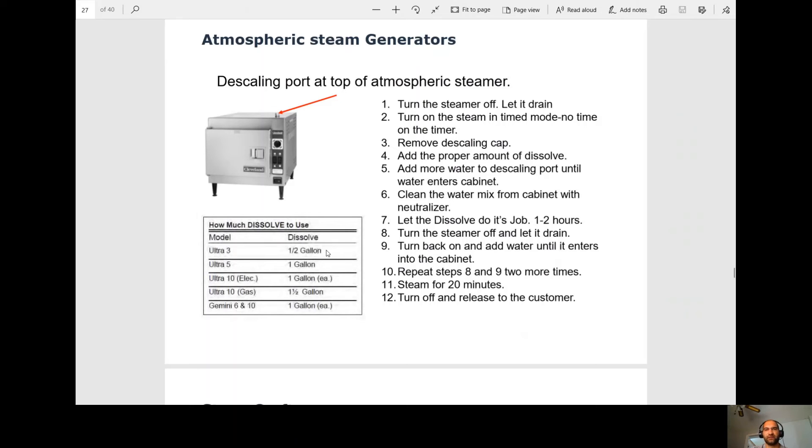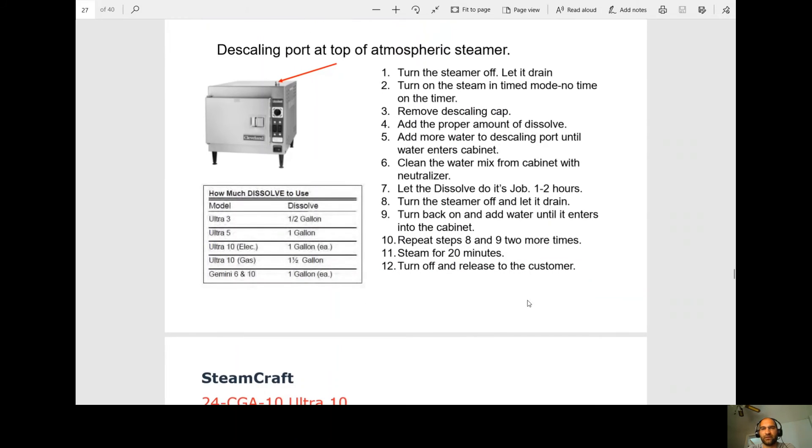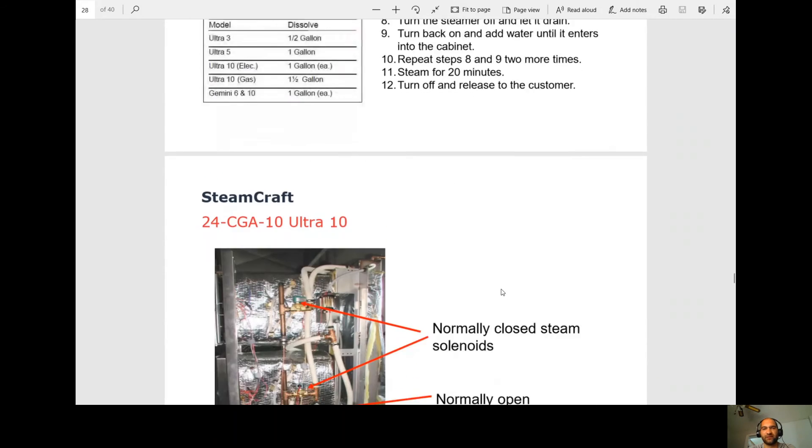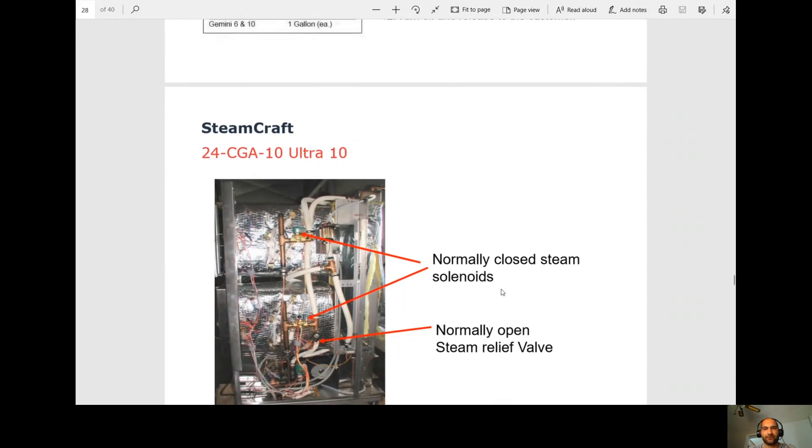Now you want to let it dissolve. So this one we only need one to two hours depending on how badly it's scaled. So some of our customers are every six months. So you could probably get away with the one hour descale if it's being done every six months, but also depending on water hardness and filters and all that good stuff. So now you're going to turn the steamer off. It's going to drain. So it's going to go into a blow down. So you're going to turn it back on and then it's going to fill and you're going to add water one more time through here so that water comes into the cabinet. So we're going to overfill the boiler. We're going to do that two more times. So we're going to drain it, we're going to refill it, we're going to overfill it, and then we're going to steam the unit for 20 minutes. After 20 minutes, the customer can get the steamer back.